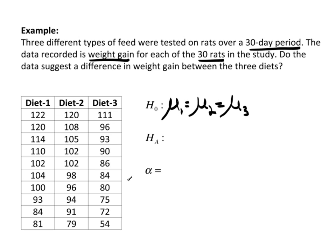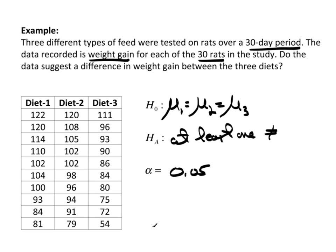Now, which one is different? Well, I don't know, so I'm just going to say at least one is not equal — somebody's different. And let's stay with 0.05 for alpha.